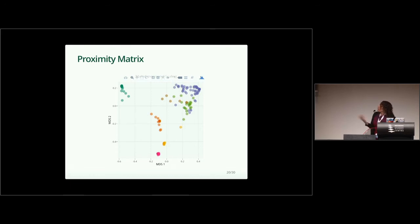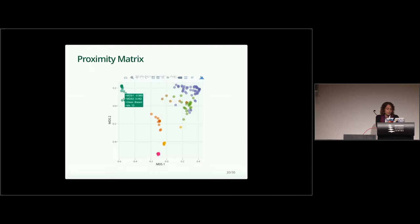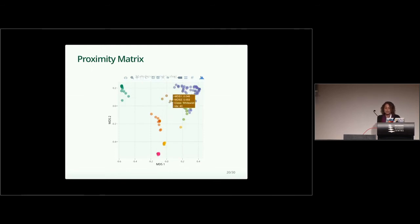This is the information from a proximity matrix using multidimensional scaling. What we can extract from here is how well our model is doing predicting each class — for example, we can identify that we are having trouble with one particular class, the white fish.